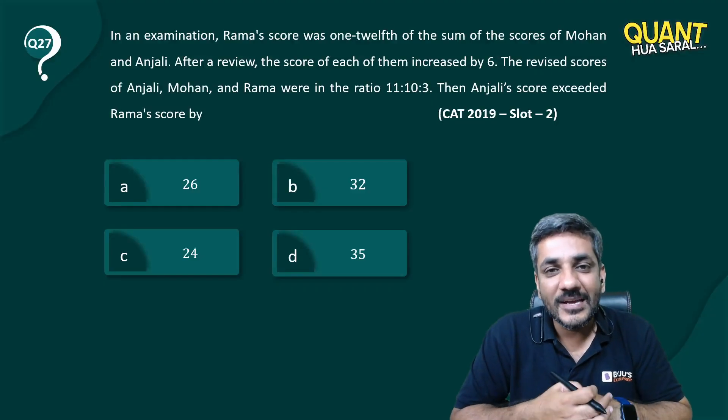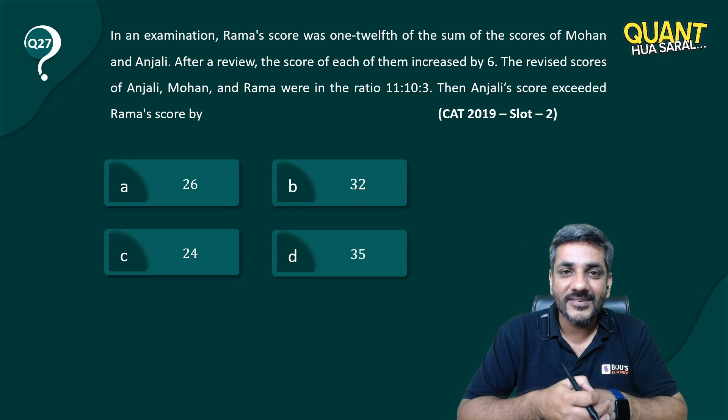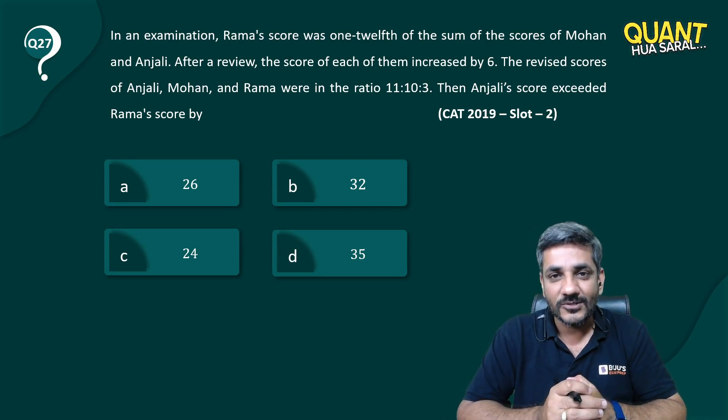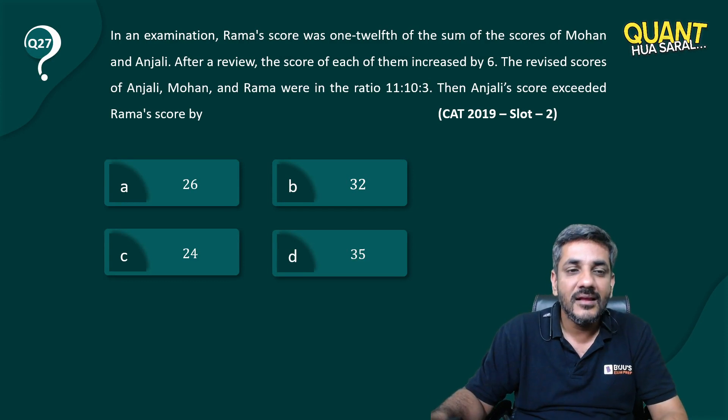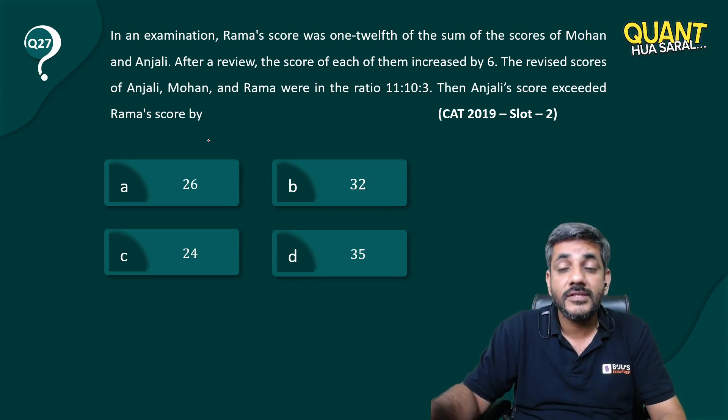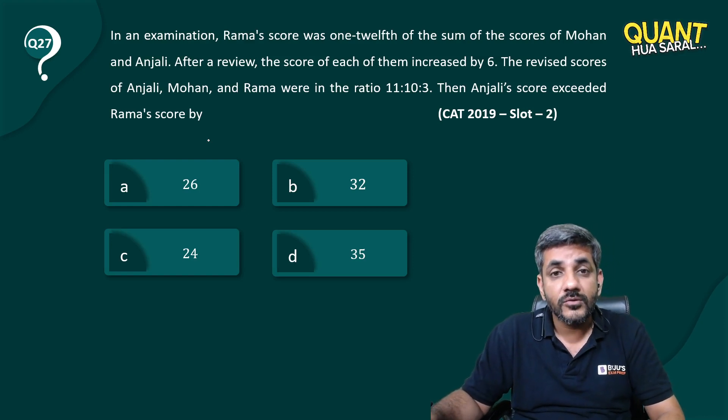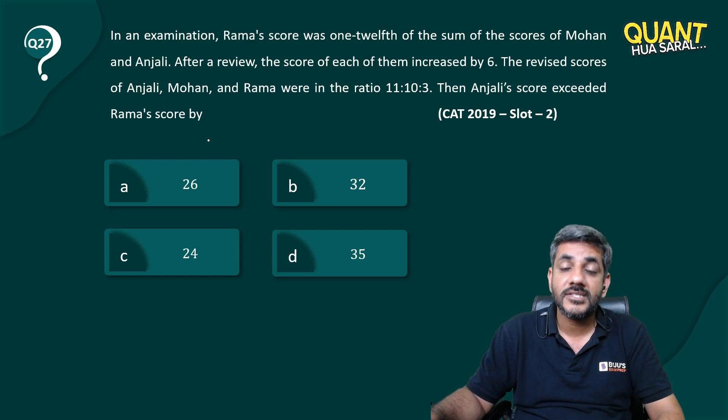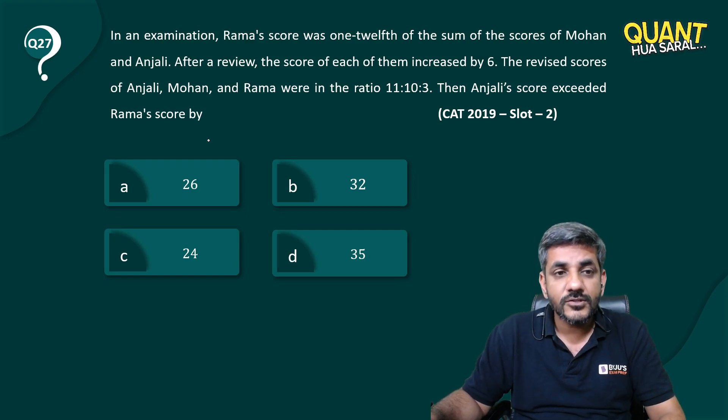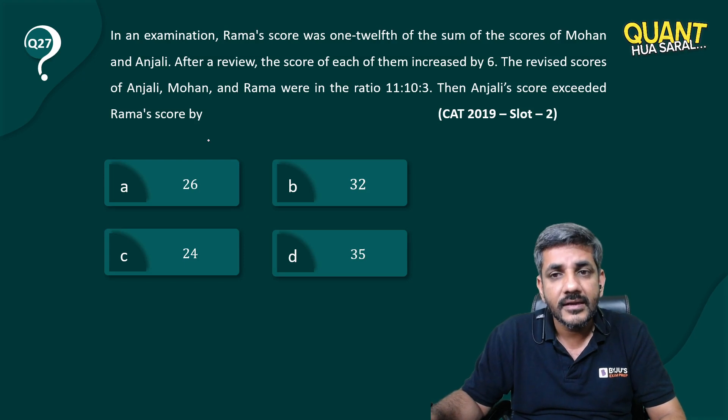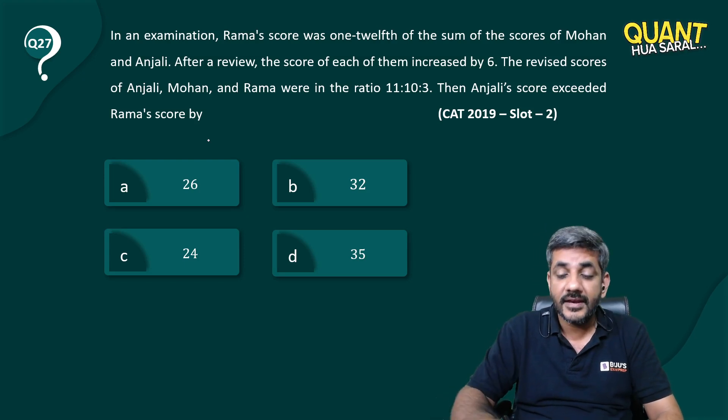Hello students, once again we are here with question number 27, and once again the question is from CAT 2019 slot 2. Let's have a look at the question. In an examination, Rama's score was one-twelfth of the sum of the scores of Mohan and Anjali. After a review, the score of each of them increased by 6. The revised scores of Anjali, Mohan, and Rama were in the ratio of 11:10:3.